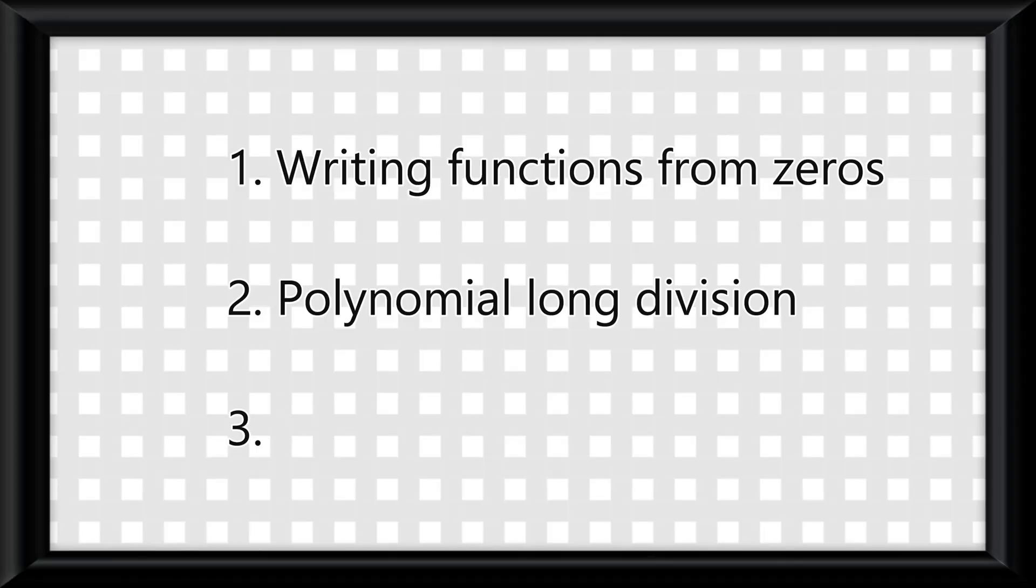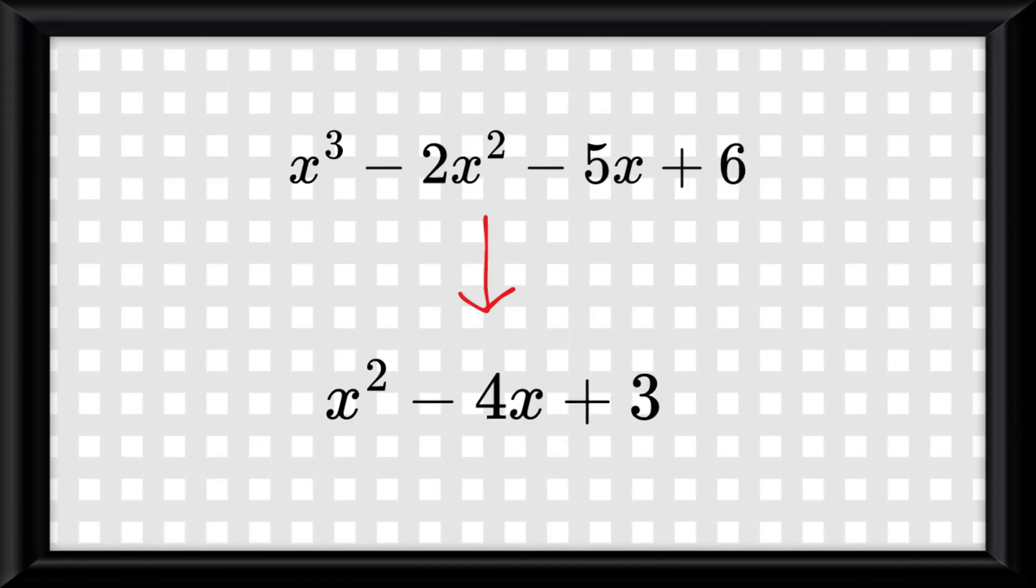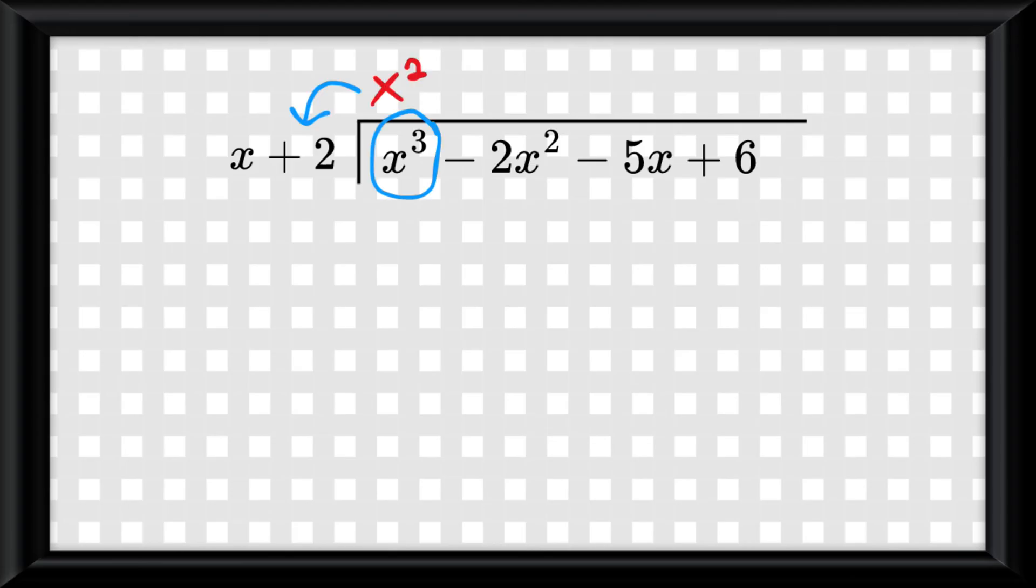Number two is polynomial long division. Sometimes to shrink a polynomial down when it has too many values in its expression, we use polynomial long division. Your goal in polynomial long division is to always make it so whatever you put on top multiplies by the divisor to get whatever the first degree of the dividend is. Then you subtract which cancels out the first degree,